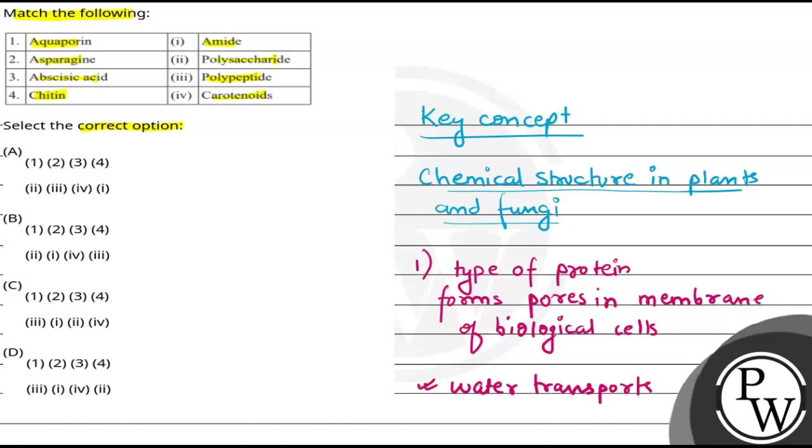Now, because it is a protein type, we can say that it is a polypeptide. This is a polypeptide example.